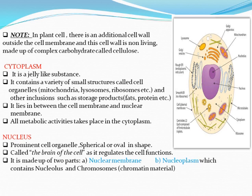The cytoplasm lies between the cell membrane and the nuclear membrane. The nucleus is the purple-colored structure and is bounded by the nuclear membrane. So the cytoplasm is present between the cell membrane and nuclear membrane. All metabolic activities — meaning chemical reactions — mainly take place in the cytoplasm.